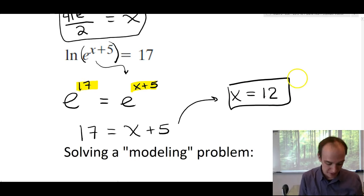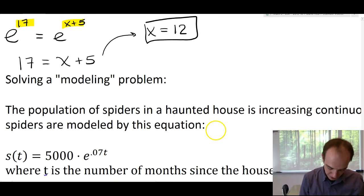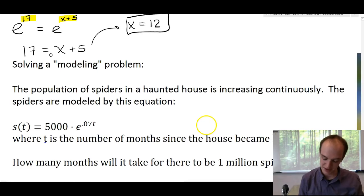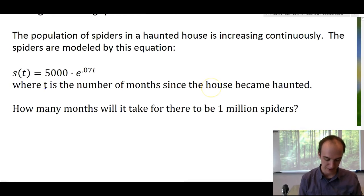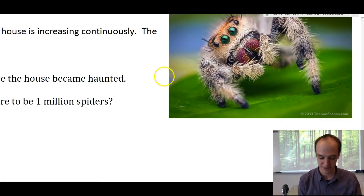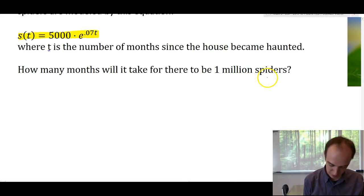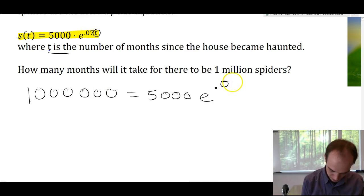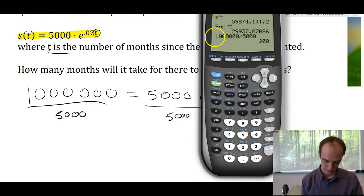All right. One final problem on this video on e, and it's a word problem. So, the population of spiders, I know you're going to love this problem, in a haunted house is increasing continuously because that's what spiders do. The spiders are modeled by this equation given right here, where t is the number of months since the house became haunted. How many months will it take for there to be one million spiders? Here's a cute little spider for you. Now, let's solve this problem. So, if we want to know how many months it will take for there be one million spiders, t is months. So, we're going to take one million and plug it in over here.